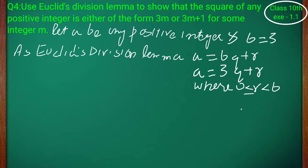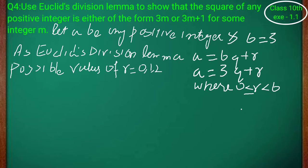جو r ہے وہ greater or equal to 0 ہے لیکن b سے less ہے۔ تو possible values of r: یا تو 0، یا 0 سے بڑا لیکن 3 سے کم — یعنی 1 اور 2۔ Possible values of r equal to 0, 1, 2.